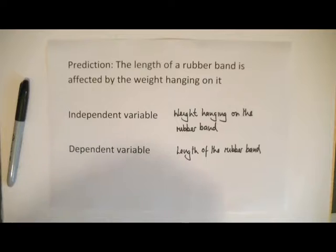Now that I know those two, I can start to construct my table. My table should have columns and the first column should always be for your independent variable.